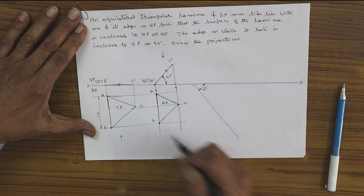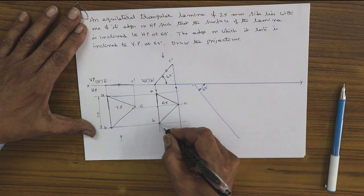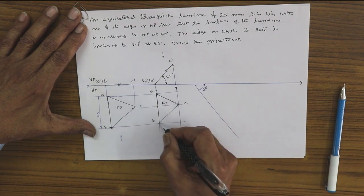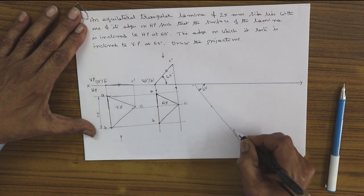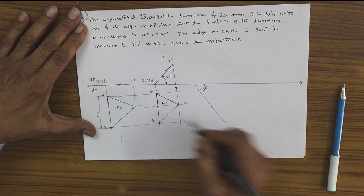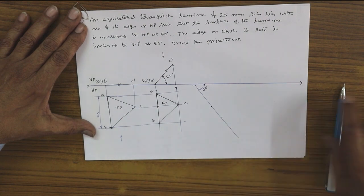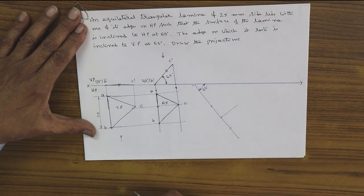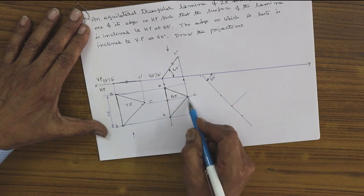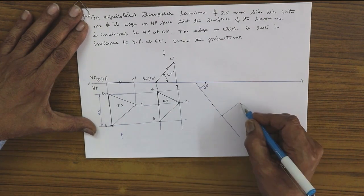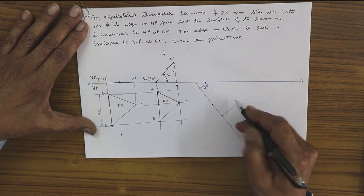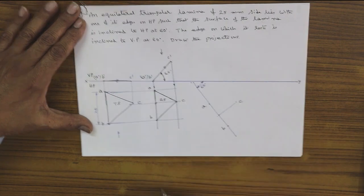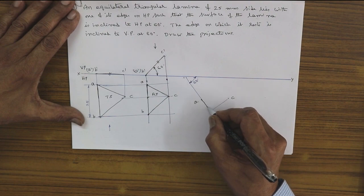Measure AB with compasses and mark AB on the 60-degree line. Locate the midpoint and draw a perpendicular at that point. Measure the altitude to point C and mark it here to get C. We now have vertices A, B, and C. Join them in order: A-B, B-C, and C-A.